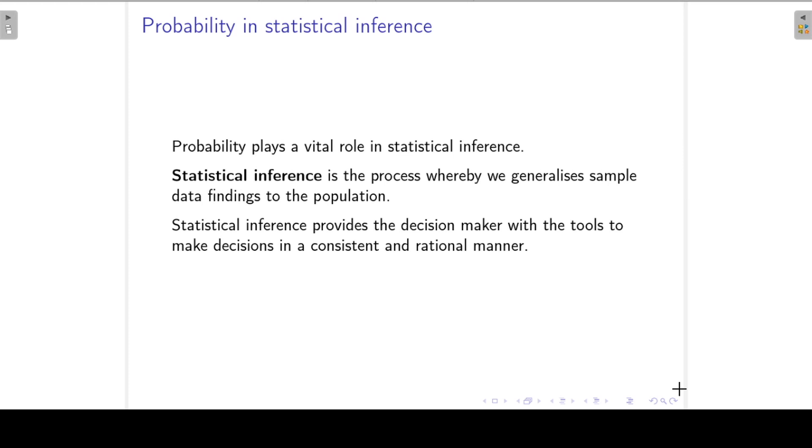Okay, welcome back. We previously said that probability plays an important role when we have to make decisions in the face of uncertainty. In statistics we make use of probability to do statistical inference. Statistical inference is the process whereby we generalize the sample data findings to the population. So probability actually forms the bridge between summary statistics for sample data and the population.